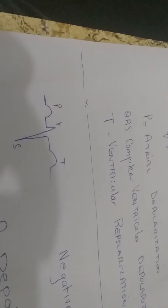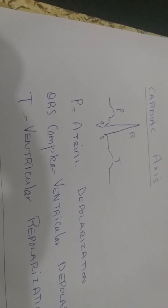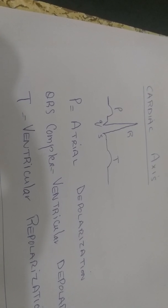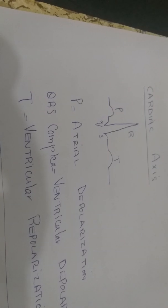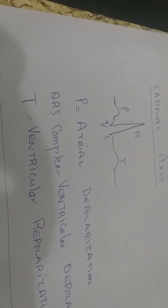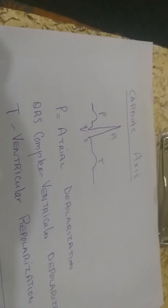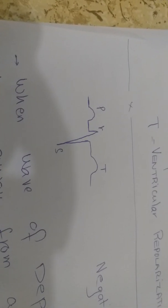To summarize: P wave is atrial depolarization, QRS is ventricular depolarization, and T is ventricular repolarization. In terms of cardiac axis, the R and S waves are very important. We have a tall R wave when the wave of depolarization is moving towards a particular electrode, and a deep S wave when the wave of depolarization is moving away from that electrode.